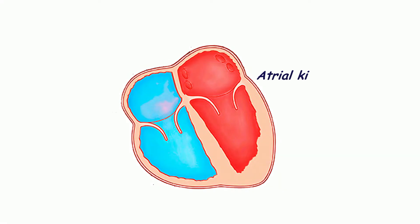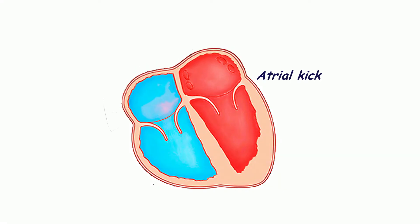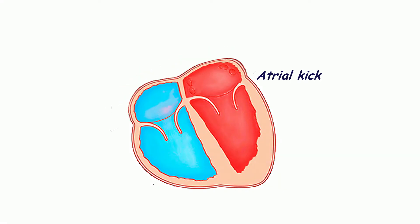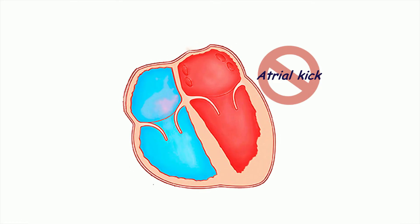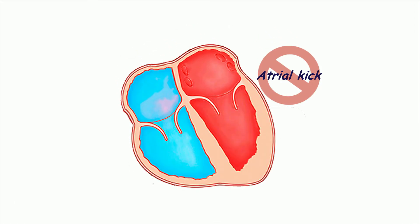Normally, the atria eject a small amount of blood into the ventricles, which is called the atrial kick. In the case of atrial fibrillation, the ventricles lose this amount of blood.